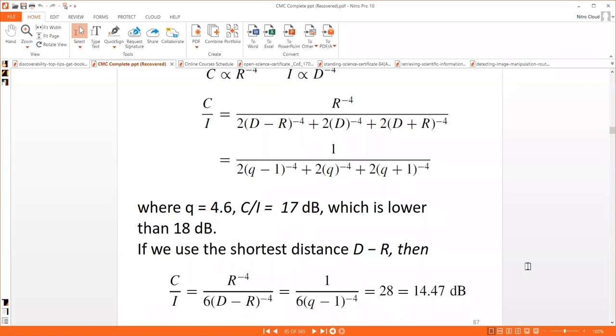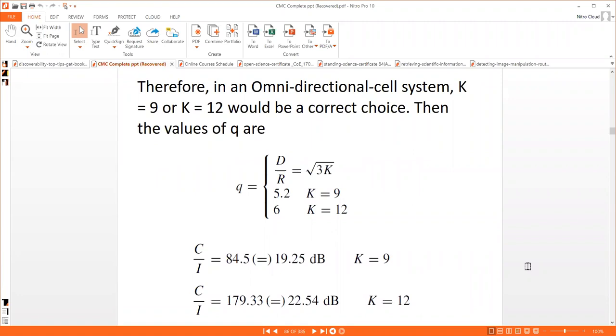Therefore, in an omnidirectional cell system, K equals 9 or K equals 12 would be a better choice. However, these are mathematical equations. When it comes to practical grounds, they are not always correct. In the sectorization process, omnidirectional antennas are replaced by directional antennas. For omnidirectional, rather than K equals 7, better to go for K equals 9 or K equals 12.